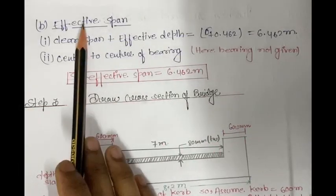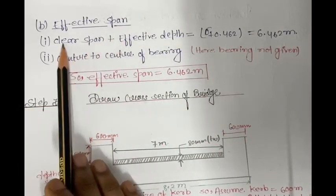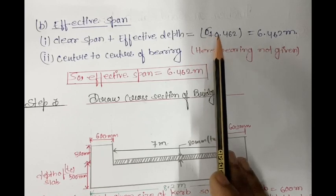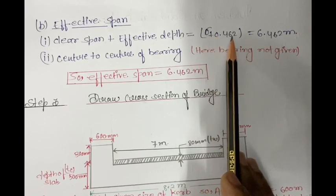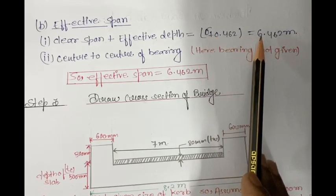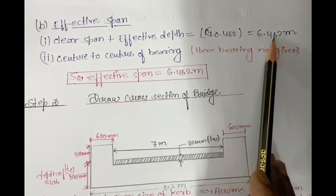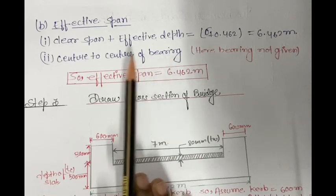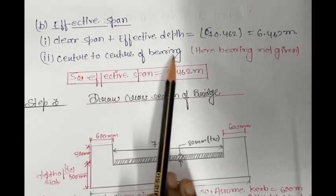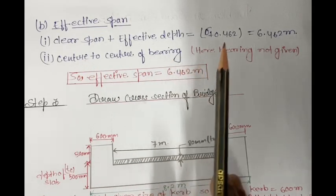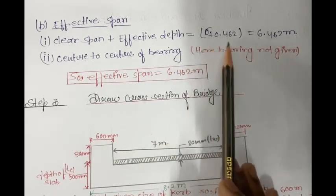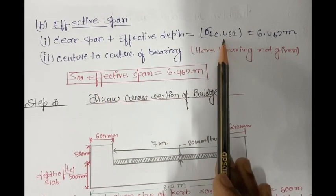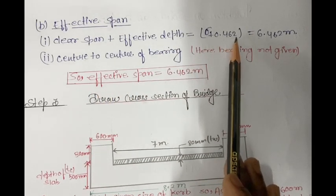For effective span, clear span plus effective depth equals 4.5 plus 0.462, giving 4.962 meter. Since centre-to-centre of bearing is not given, we use effective span equal to clear span plus effective depth. The effective span LE is taken as 6.462 meter.